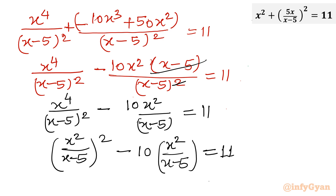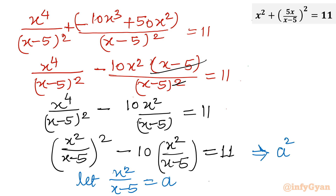You can see it is quadratic in x²/(x-5). So let us give the substitution: let x²/(x-5) = a. This equation becomes quadratic: a² - 10a = 11. So let us solve this quadratic equation: a² - 10a - 11 = 0.